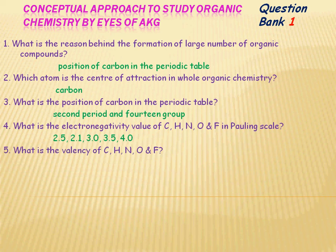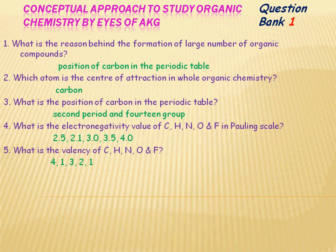What is the valency of carbon, hydrogen, nitrogen, oxygen, and fluorine? The valency of carbon is 4, hydrogen is 1, nitrogen is 3, oxygen is 2, and fluorine is 1. This valency must be known because carbon forms tetrahedral geometry, which can be explained with a valency of 4. If a compound is not tetrahedral — it may be planar or linear — carbon must still be bonded with 4 atoms, whether through pi bonds or sigma bonds.